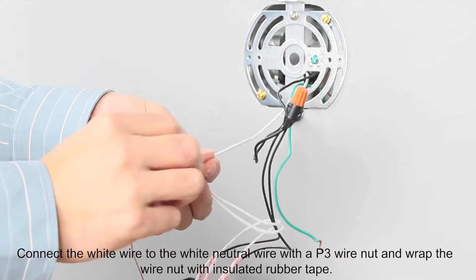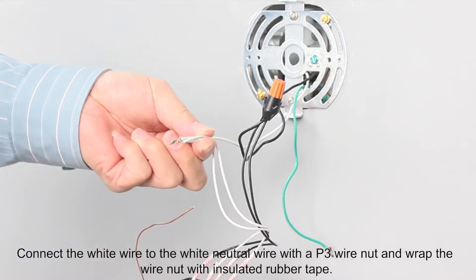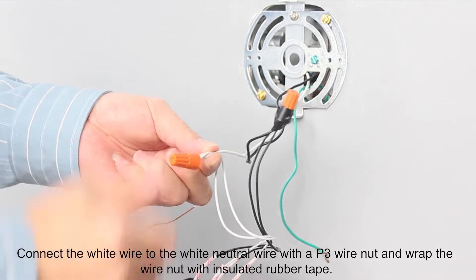Connect the white wire to the white neutral wire with a P3 wire nut and wrap the wire nut with insulated rubber tape.